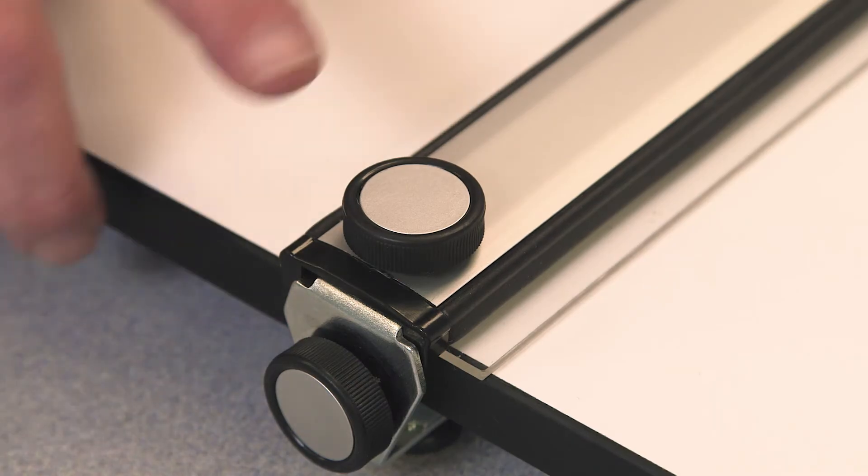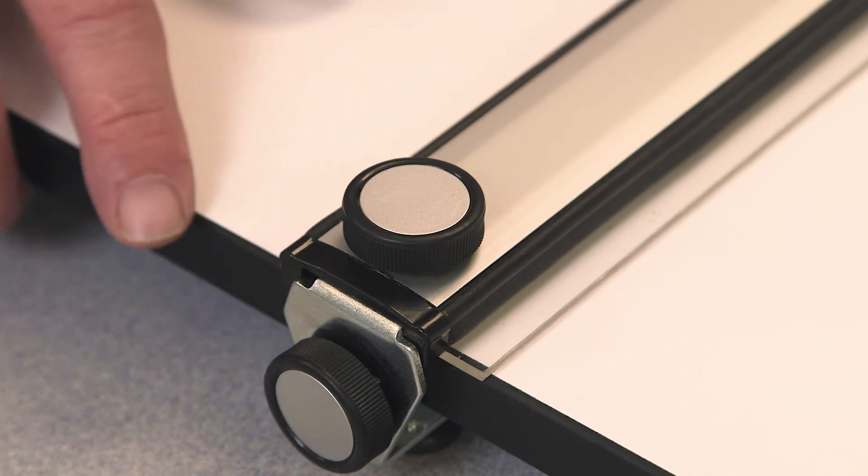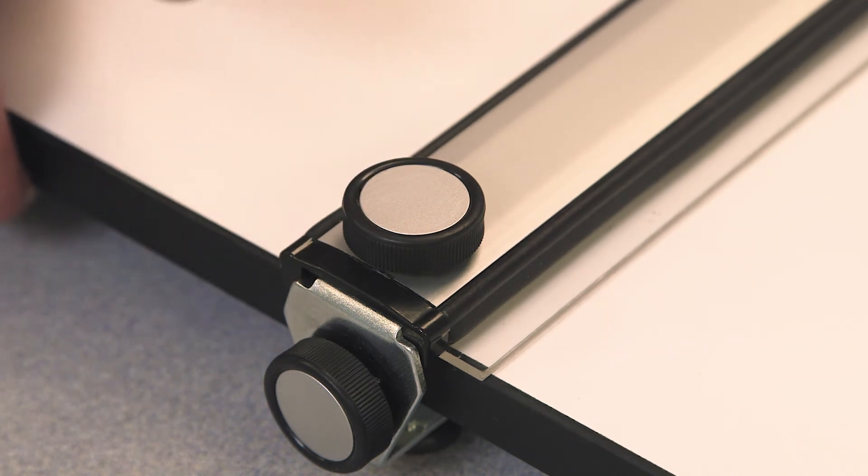The other two knobs on the top of the straight edge are for fine tuning parallelism, which is particularly useful when you're inserting an existing drawing for additional work.